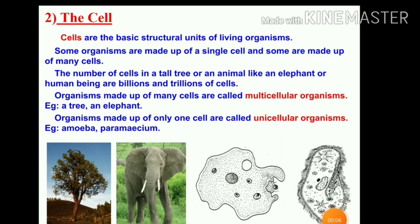Organisms made up of only one cell are called unicellular organisms — for example, amoeba and paramecium. Trees and elephants are made up of many cells, but amoeba and paramecium have only one cell.